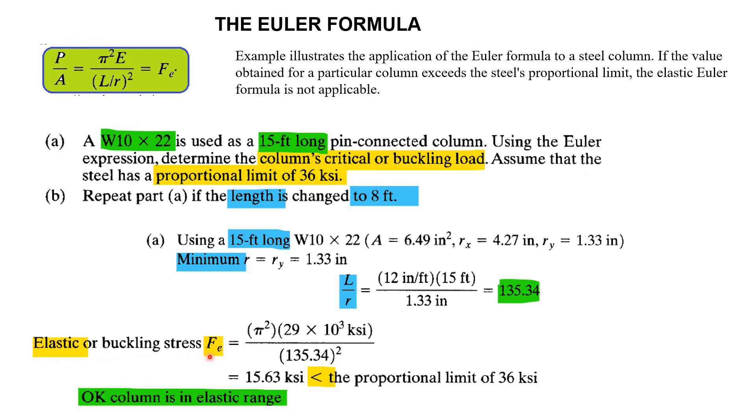The elastic or buckling stress Fe is π squared E by L by r whole squared, giving us 15.63 KSI. This is well within the proportional limit of 36 KSI, so the column is in the elastic range.